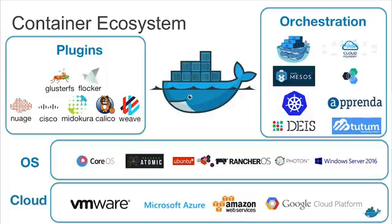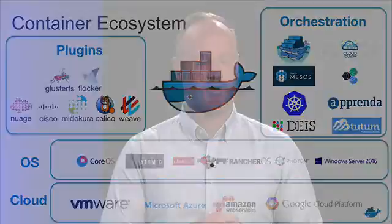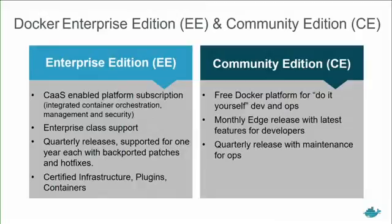Docker is part of a wider container ecosystem. We work with more than 450 partners that provide content and plugins on Docker Store. Docker is also part of the broader container vendor landscape, and it's based on open standards — we work actively with the CNCF and the OCI to build on standard technology, so you have choice. Docker comes in two editions: Docker Community Edition and Docker Enterprise Edition. Community Edition is based almost purely on open source software and freely available. Enterprise Edition is our subscription product for enterprises that want to run containers in production, providing a full container-as-a-service platform with enterprise support.